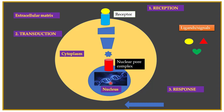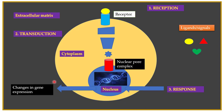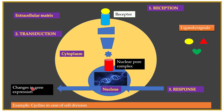In the response step, these activated transcription factors interact with the promoter regions of specific genes, leading to changes in gene expression. For example, if the ligand interacting with the receptor is a growth factor, then at the end, the activated transcription factor will activate or transcribe those particular genes required for cell division. Cyclins are one of the important proteins required for regulated cell division.